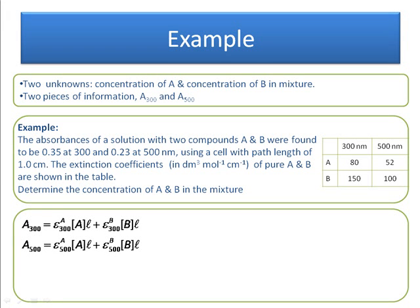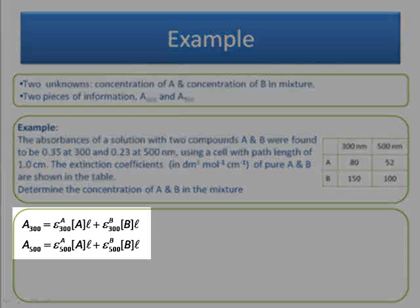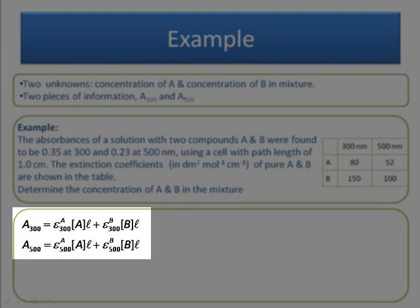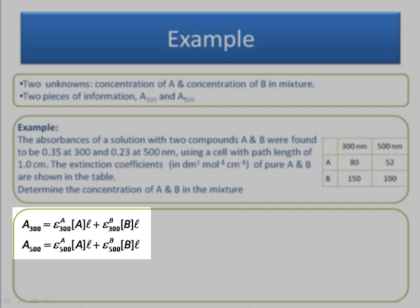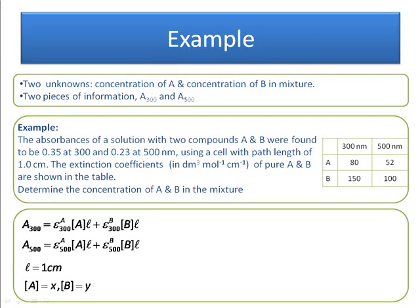So we can use this idea of saying that the absorption at 300 is equal to the absorption of A at 300 plus the absorption of B at 300. So I'm just writing this out in a more formal way using the Beer-Lambert law. And the absorption at 500 is equal to the absorption of A at 500 plus the absorption of B at 500. We can assume that L, the path length, is equal to 1 cm.